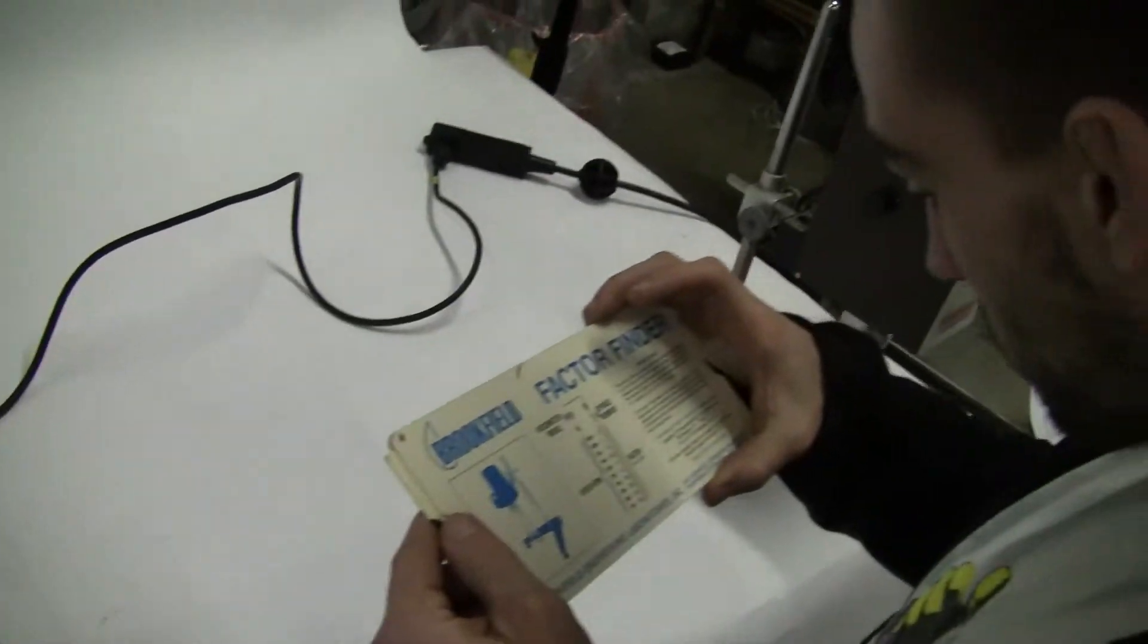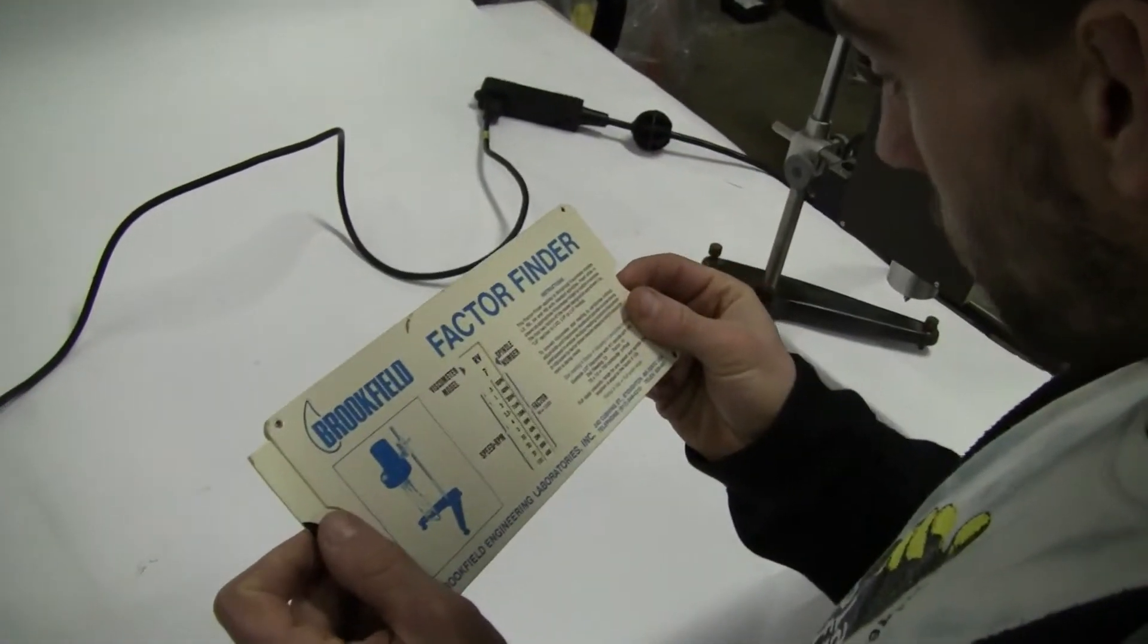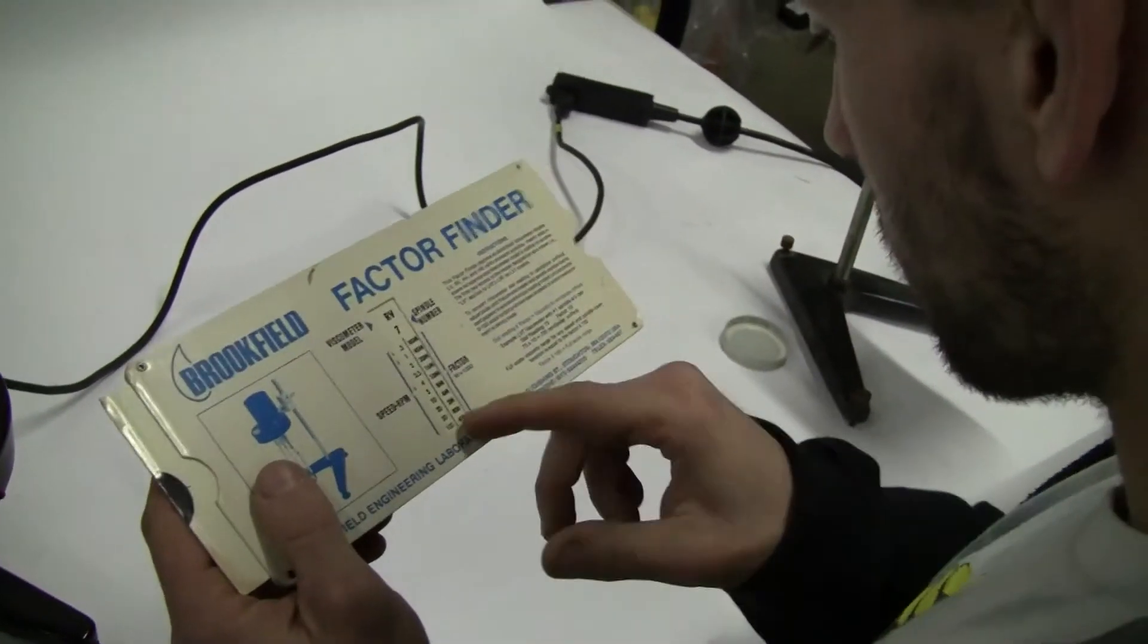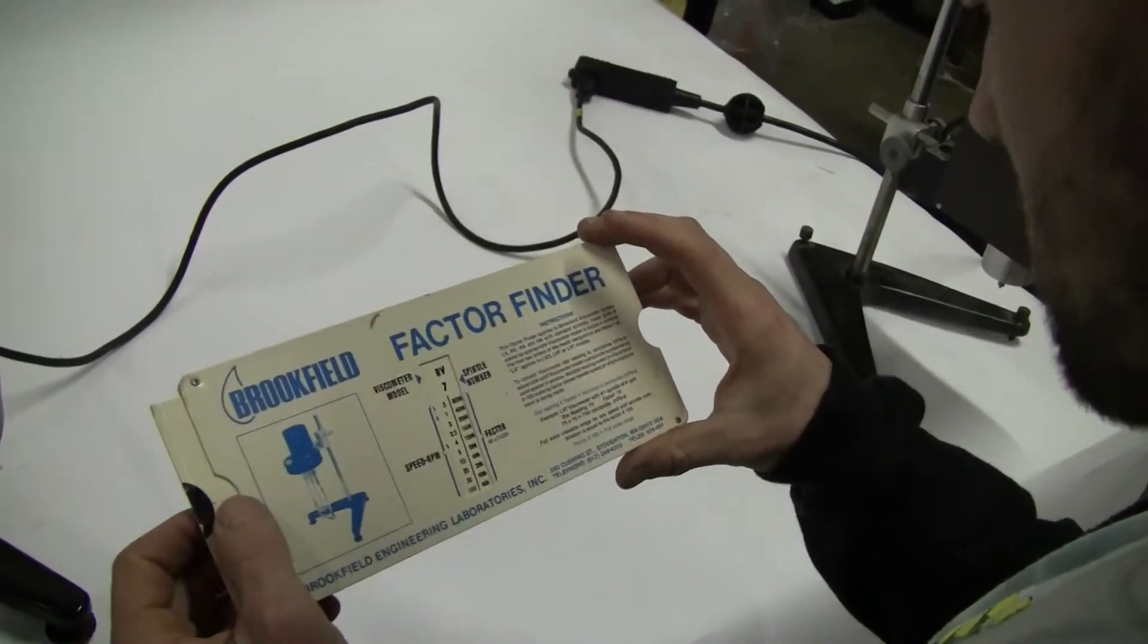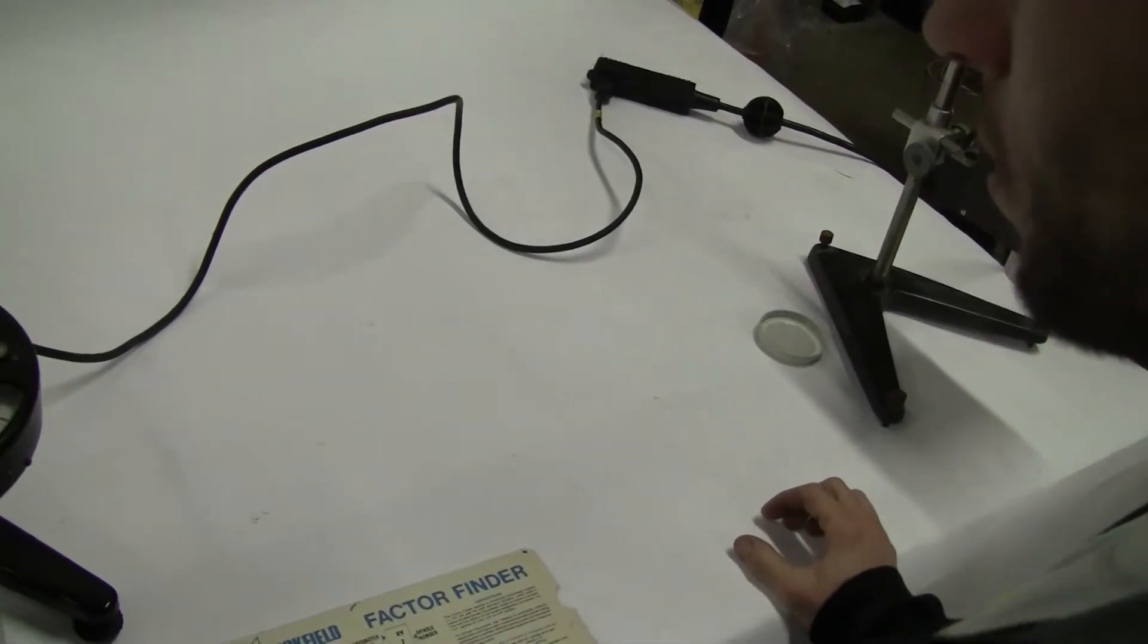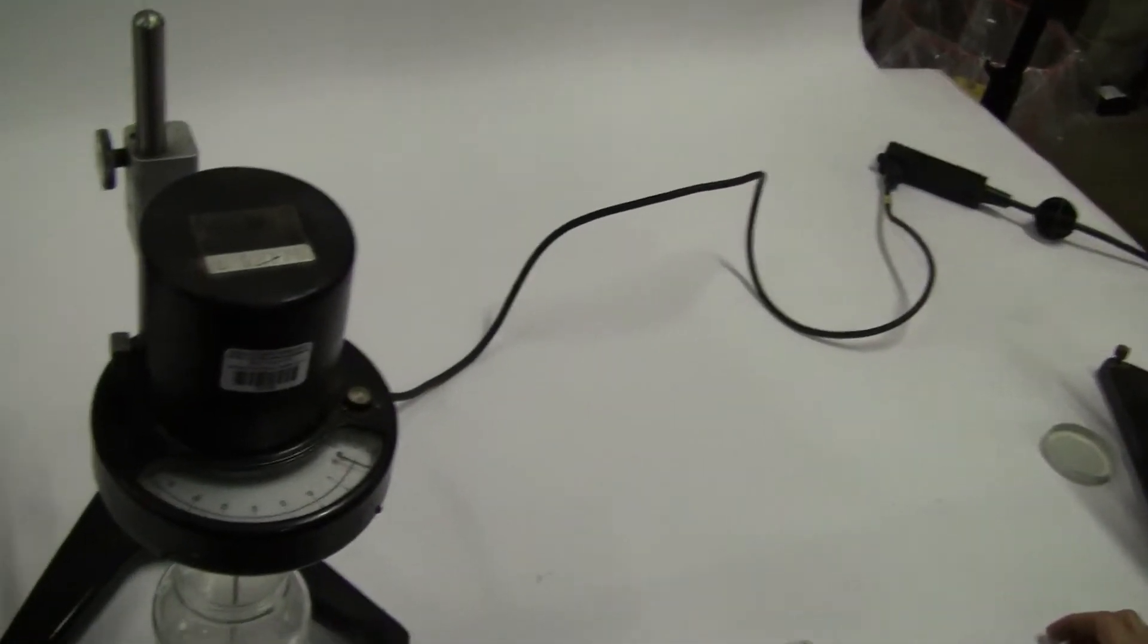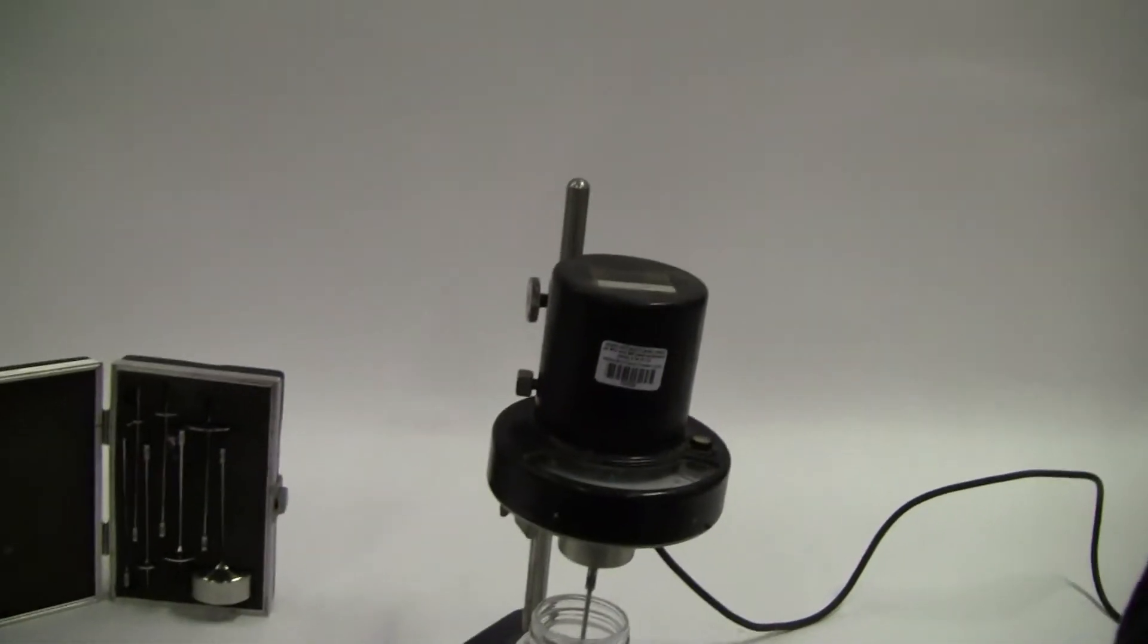We look at our factor here. We're using spindle number 7. Our factor is 1,800 times our 19 and a half. So that puts us about 15,600. That's within our range.